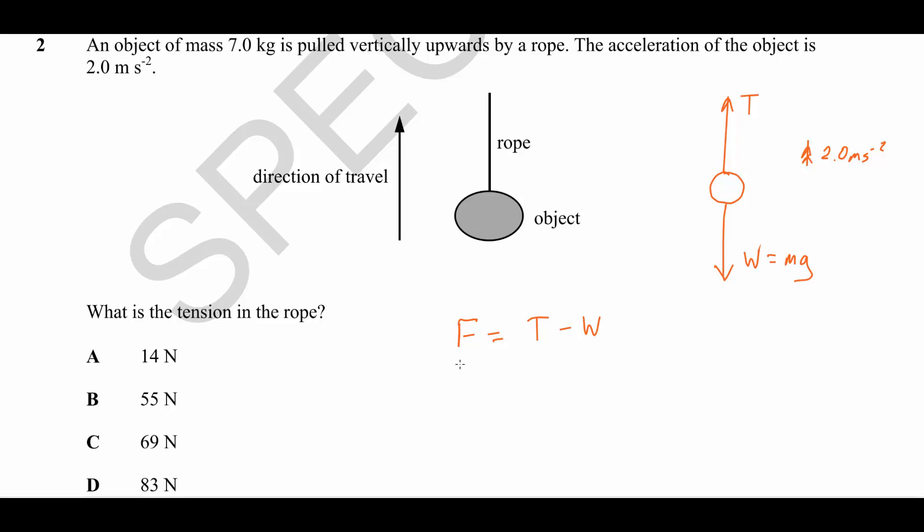So we can say that the force, the net force upwards, is the difference between the tension and the weight. So we can rearrange this to get that the tension is equal to the net force upwards plus the weight.